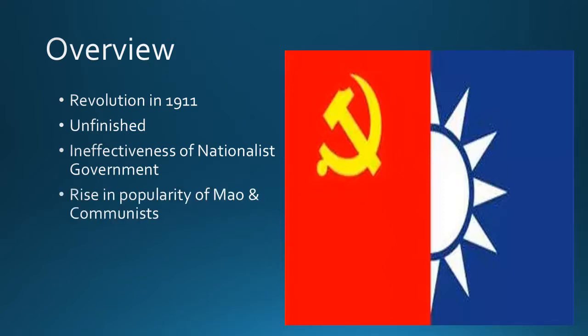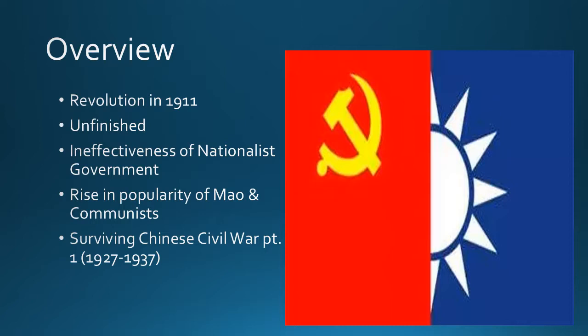As all this was going on, the Chinese Communist Party started off relatively slow but began to rise substantially in popularity, much of that tied to Mao's rising popularity. The last thing we discussed was why the communists were able to survive the first part of the Civil War, even though everything was tipping in the favor of the nationalists. And we see the formation of the Second United Front in 1937, with the communists on one side and the nationalists on the other, necessary to fight the Japanese.